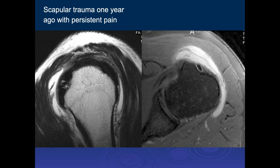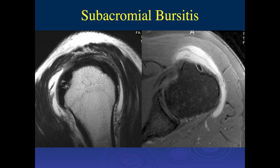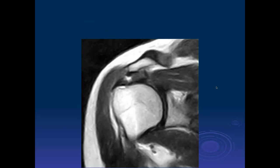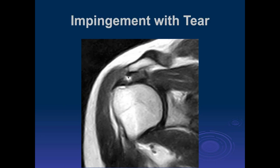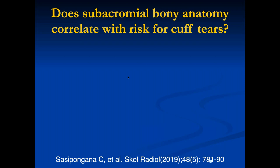Here we can see synovial thickening and fluid within the subacromial-subdeltoid bursa due to a high-grade partial tear with subacromial bursitis. Another example shows eburnation and an inferior osteophyte on the acromion process with a focal near-full-thickness (possibly full-thickness) bursal-side tear.